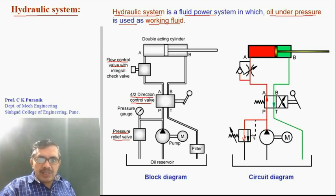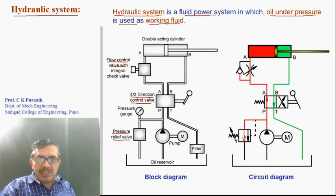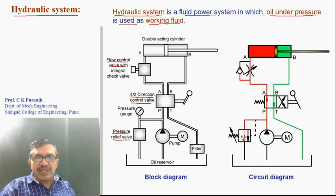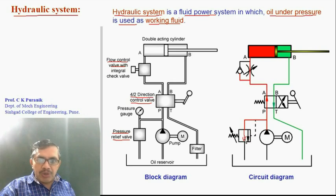The pressure at which the valve should open is set using a knob and a spring. By turning the knob, the spring tension can be increased, decreased, or adjusted according to requirement, so that we can set the pressure at which the valve opens.